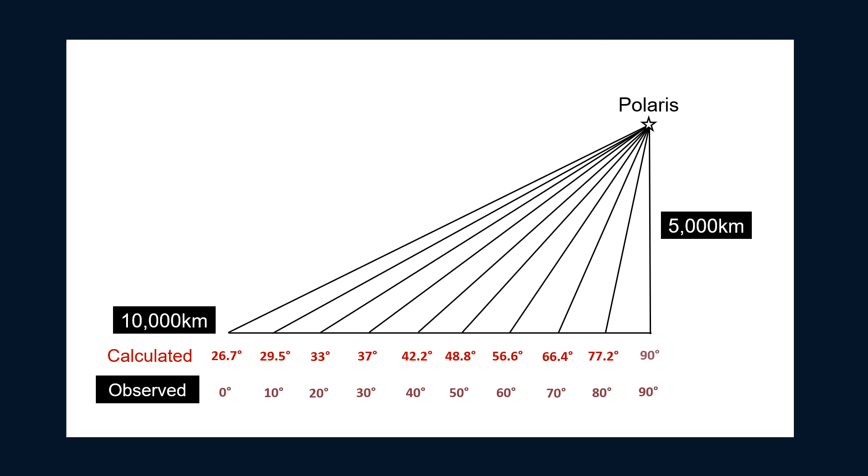when we use these right triangles to make calculations of what we should observe at each latitude, we can see that it does not match what we actually see at each latitude except up here at the North Pole.